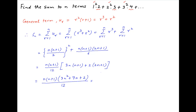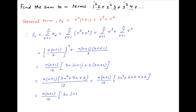This can be written as n(n+1)/12 multiplied by [3n(n+2) + (n+2)], which equals n(n+1)/12 multiplied by (n+2)(3n+1). Therefore, S_n is equal to n(n+1)(n+2)(3n+1)/12, which is the required answer.